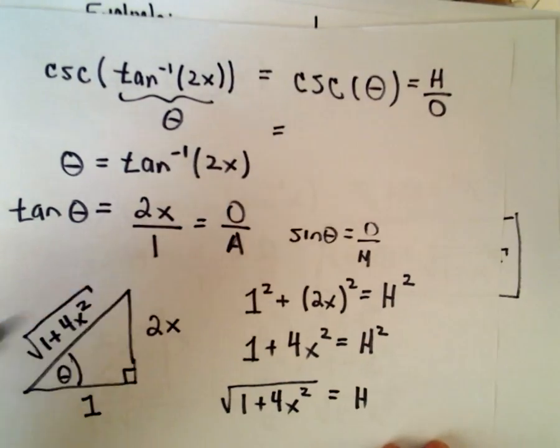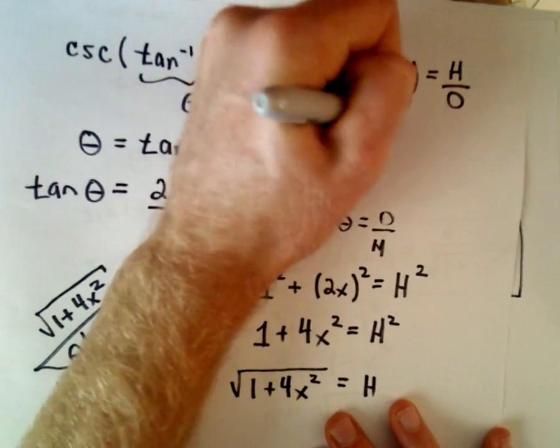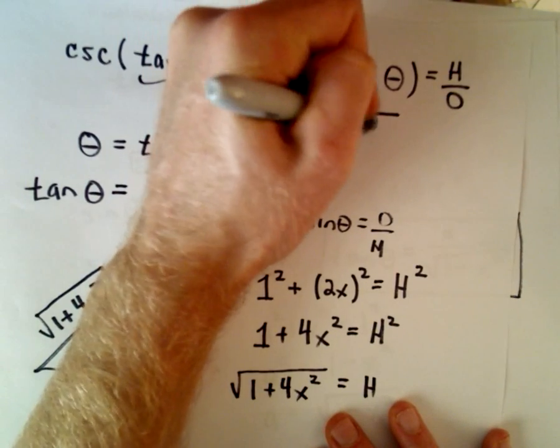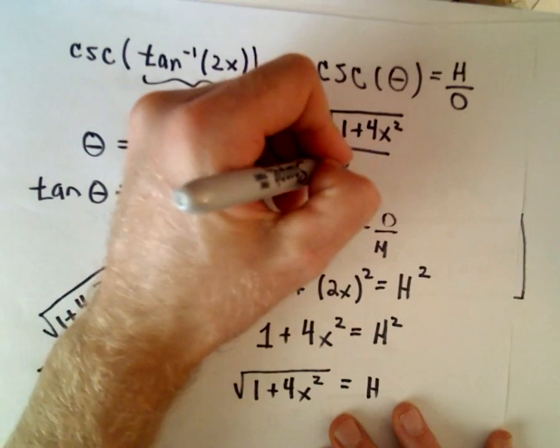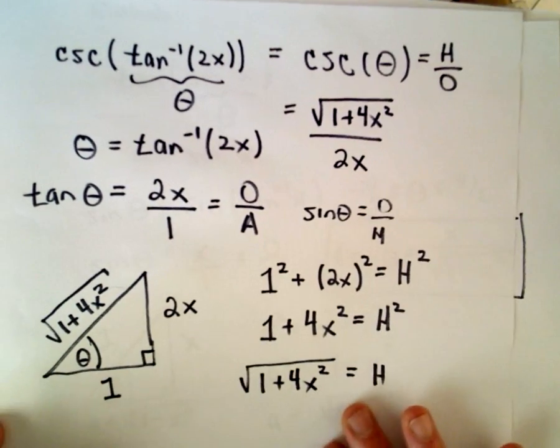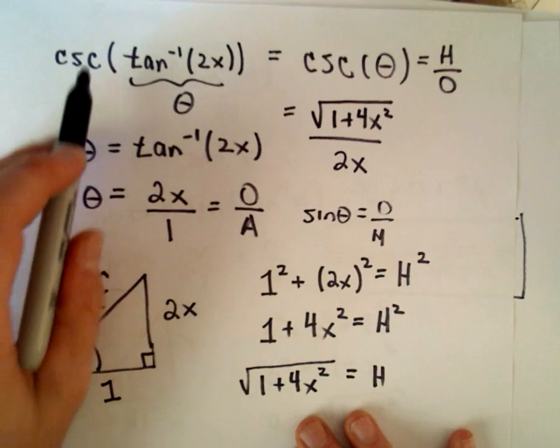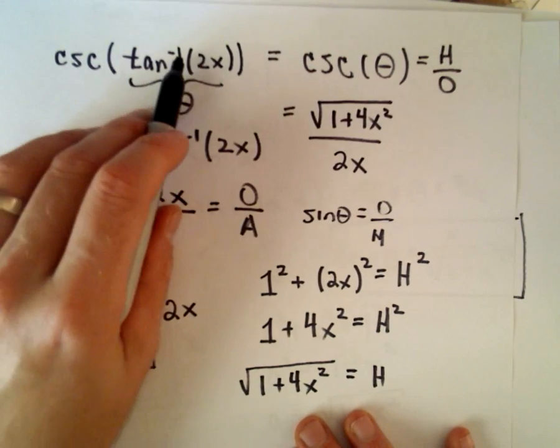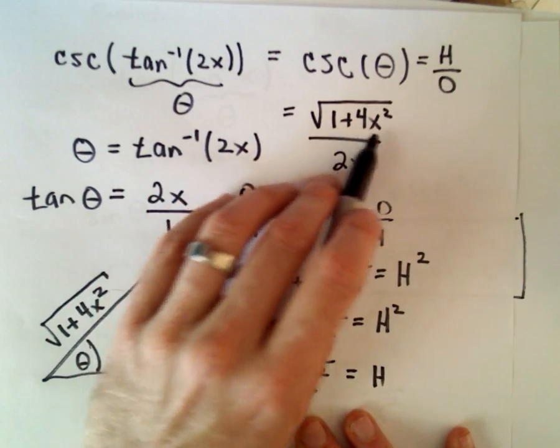So let's see. The hypotenuse has a value square root of 1 plus 4x squared over the opposite side, which is 2x. And that's now going to be our expression.